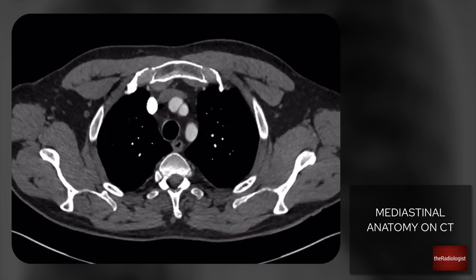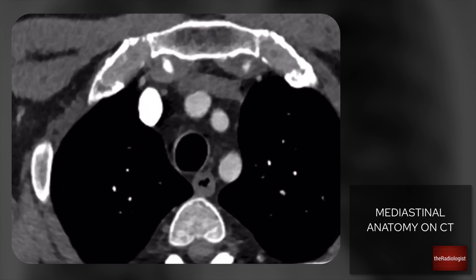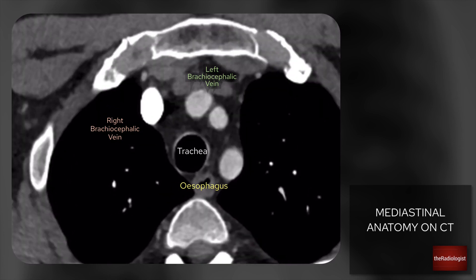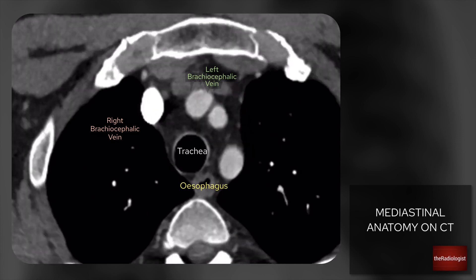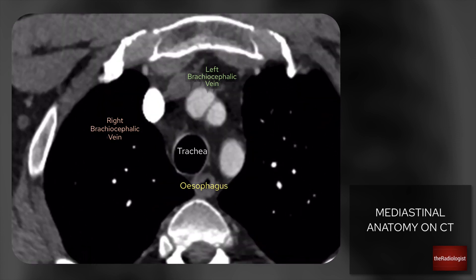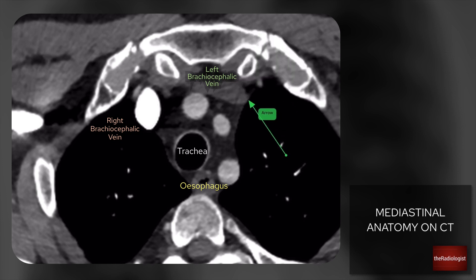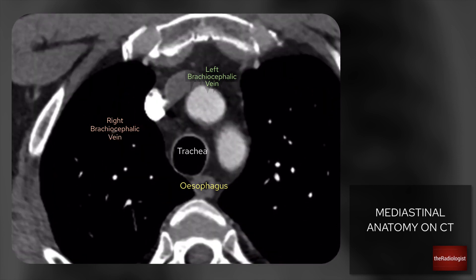On this slice we can see five vessels. We've got the trachea and the esophagus, and then five vessels. I like to think of the two vessels at the front looking like a snake trying to eat an apple. The snake is the left brachiocephalic vein and the apple is the right brachiocephalic vein — that just helps me remember both of those structures.